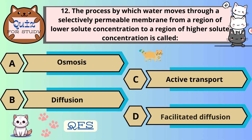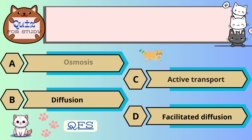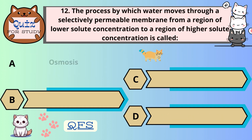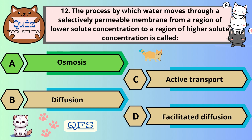Number 12. The process by which water moves through a selectively permeable membrane from a region of lower solute concentration to a region of higher solute concentration is called — the correct answer is A. Osmosis.